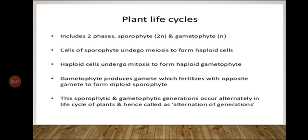Some special cells of the Sporophyte undergo Meiosis to form haploid cells. These haploid cells then undergo Mitosis and form the haploid Gametophyte. The Gametophyte produces male and female gametes, which fertilize with each other to form the diploid Sporophyte. Thus the Sporophytic and Gametophytic generations occur alternately in the life cycle of a plant, and this process is called Alternation of Generations.